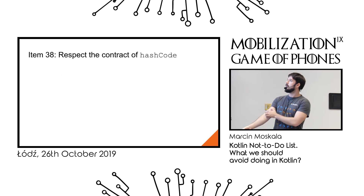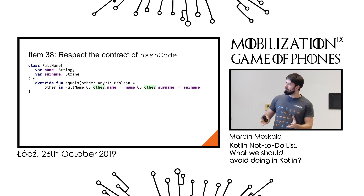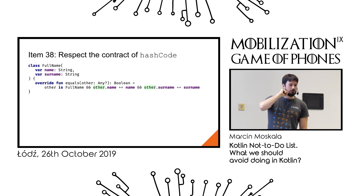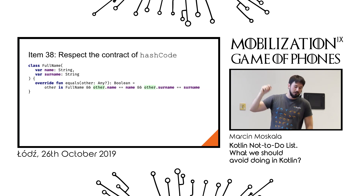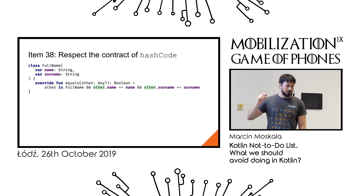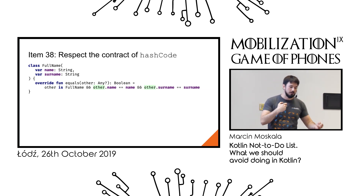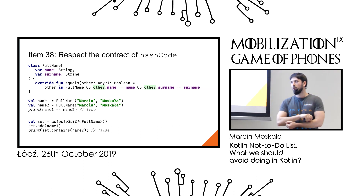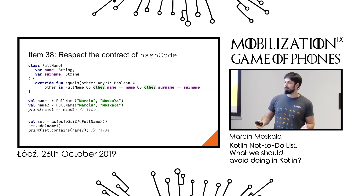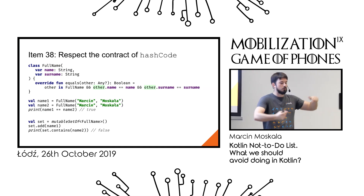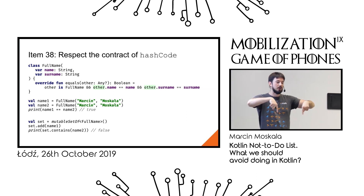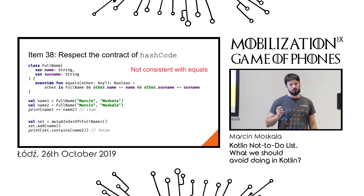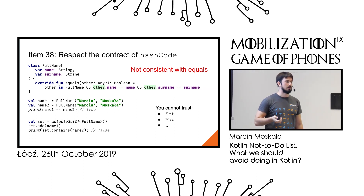Similarly, hashCode has a complicated contract. One common problem: you implement equals but no hashCode. When two equal objects are placed in a HashSet, because hashCode isn't implemented consistently, they land in different buckets even though they're equal — so contains returns false. You can't trust Set, Map, or anything using a hash table. You might think returning a constant hashCode solves this, but then all elements land in the same bucket, making equals comparisons explode combinatorially.